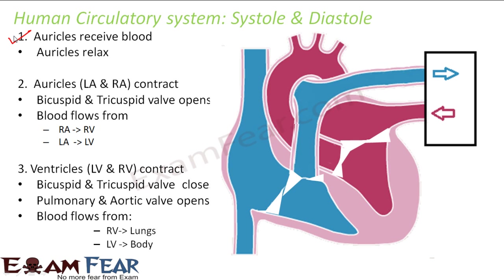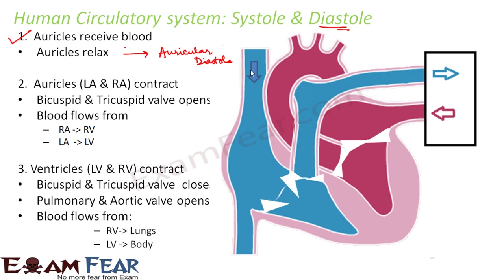The relaxation state is known as diastole — the term diastole is used for the relaxation state. So this relaxing state of the auricles is referred to as auricular diastole. Here you can see the blood entering into the auricles, so the auricles are in a relaxing state.